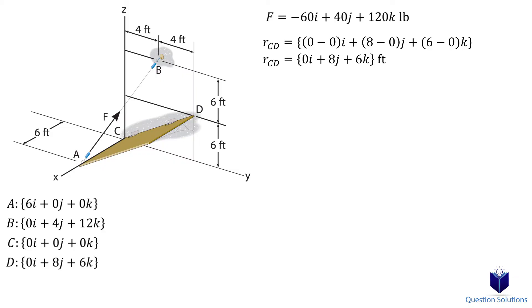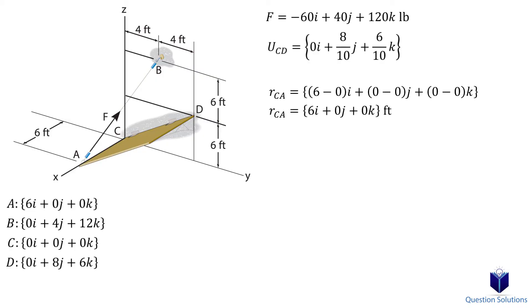Next, we need the magnitude of this position vector. Now we can write down the unit vector. That's the second step finished. The last thing we need is a position vector from the origin to where the force begins. In this problem, that's from C to A. So our position vector CA is 6i + 0j + 0k.